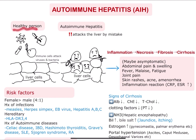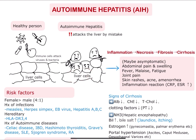In a healthy person, your immune system is supposed to attack the bacteria and viruses invading your body. But in autoimmune hepatitis, your immune system starts attacking the liver cells by mistake, causing inflammation in the liver, leading to necrosis, fibrosis, and eventually cirrhosis if it's left untreated.